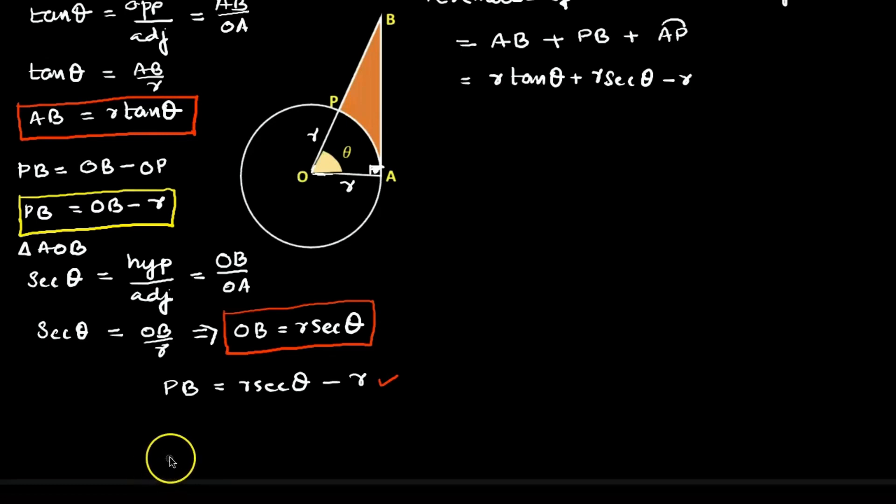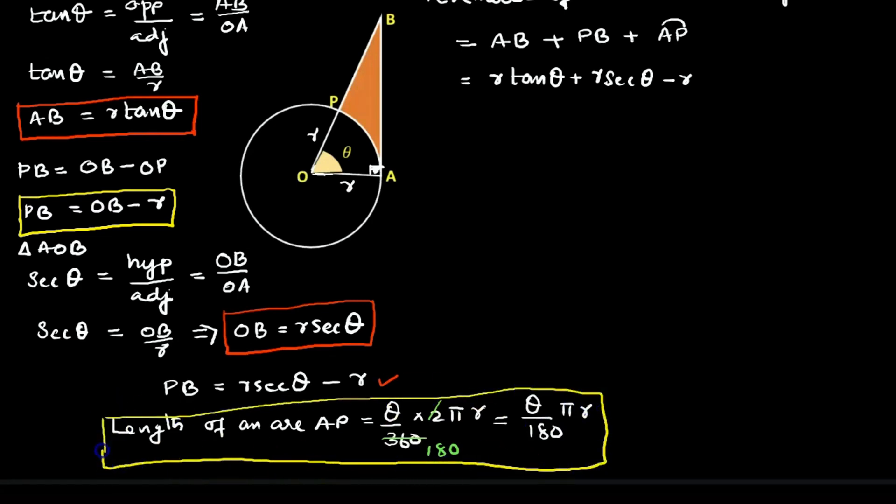Now we have to get the length of an arc. We know that the length of an arc equals θ/360 times 2πr. So length of arc equals θ/360 times 2πr. The 2 and 360 cancel to get 180, so the final answer is θ/180 times πr.